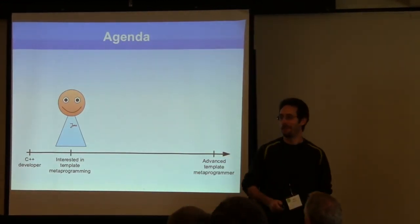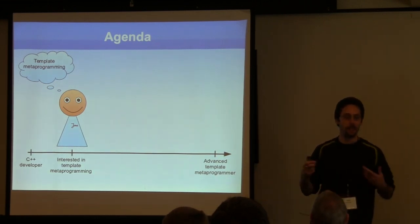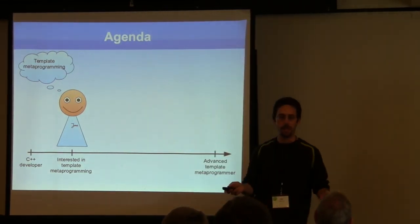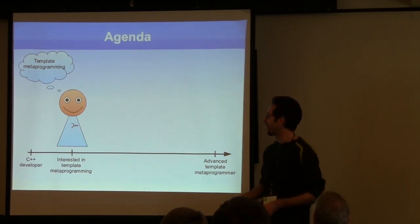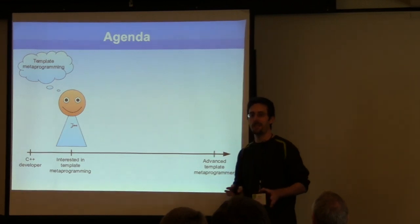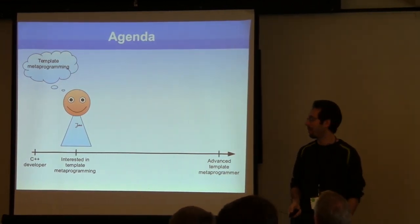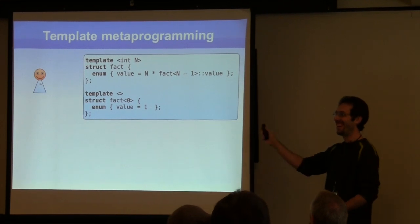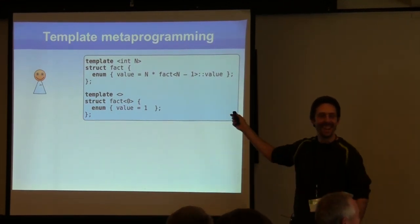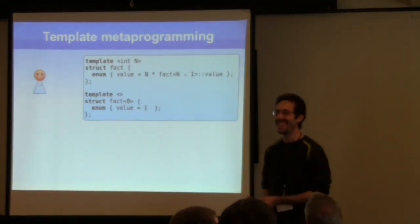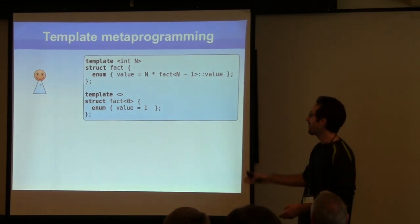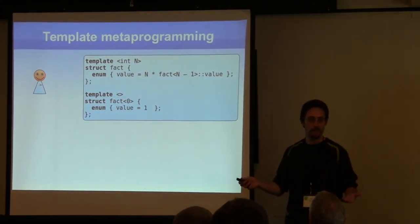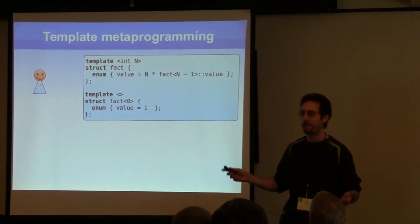Joe became interested in template metaprogramming. He has been using libraries based on template metaprogramming and heard that he can use these template tricks to solve problems he cannot solve otherwise—in library interfaces and these sorts of things. So Joe reads some books, and after a while he says: okay, I think I know enough. I will try to implement the classical factorial as a template metaprogram. He wants to calculate factorials at compile time as a first step.